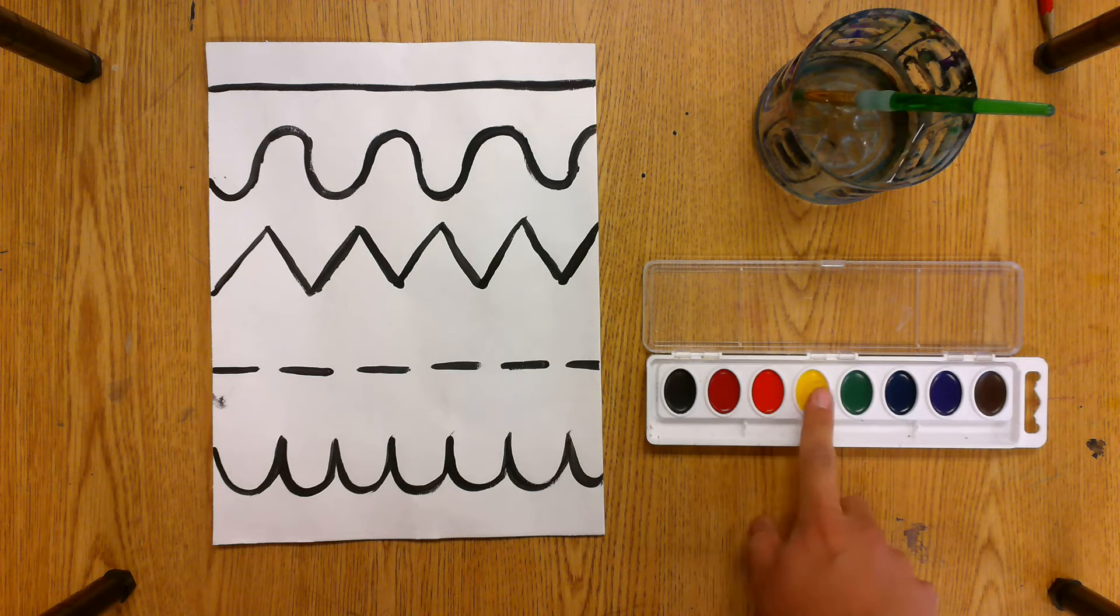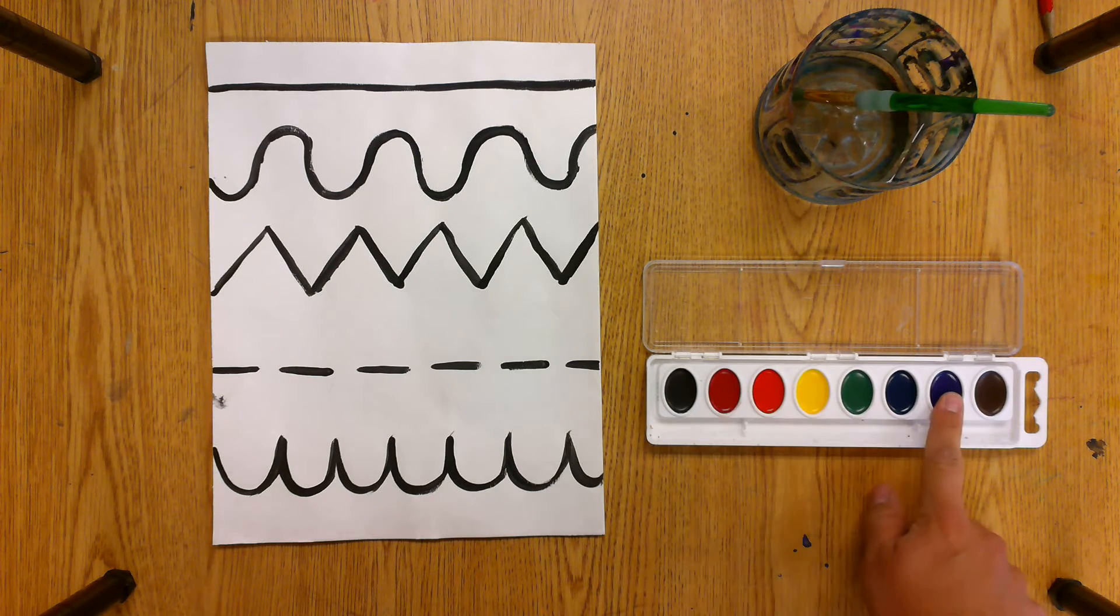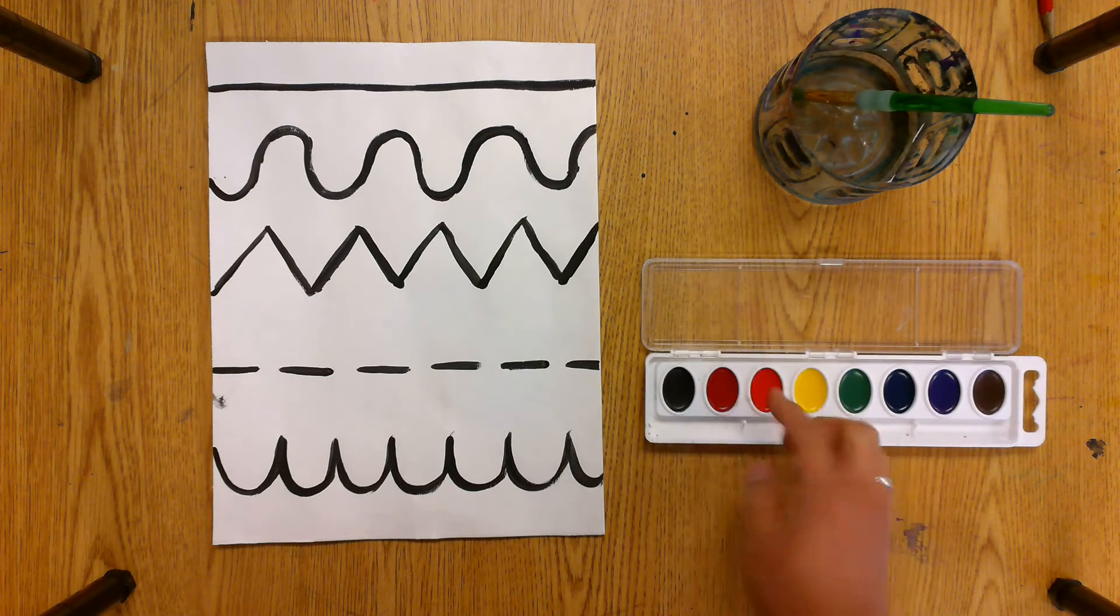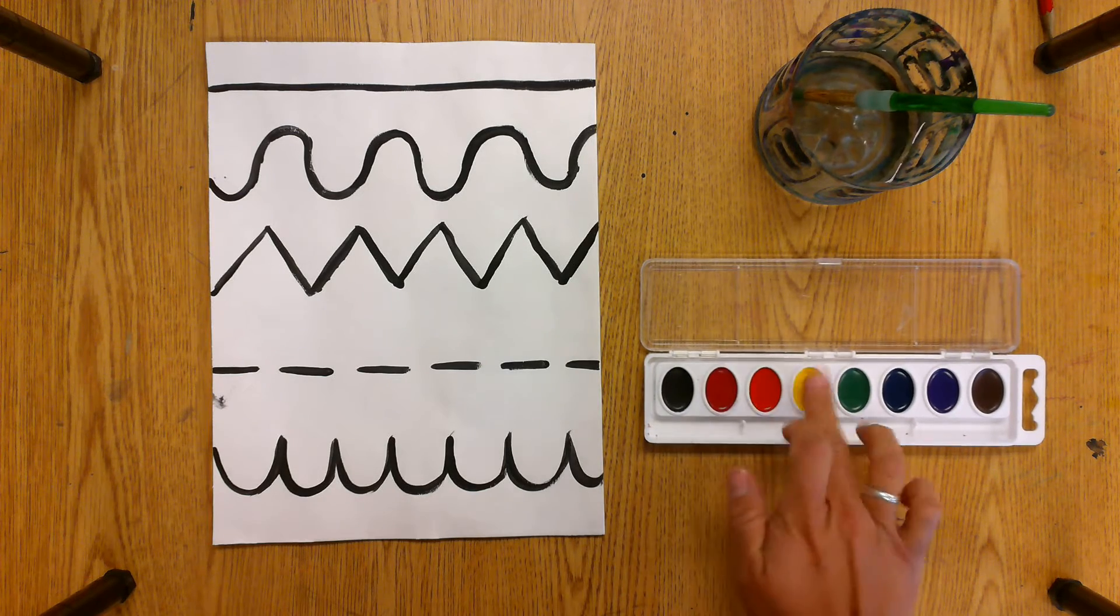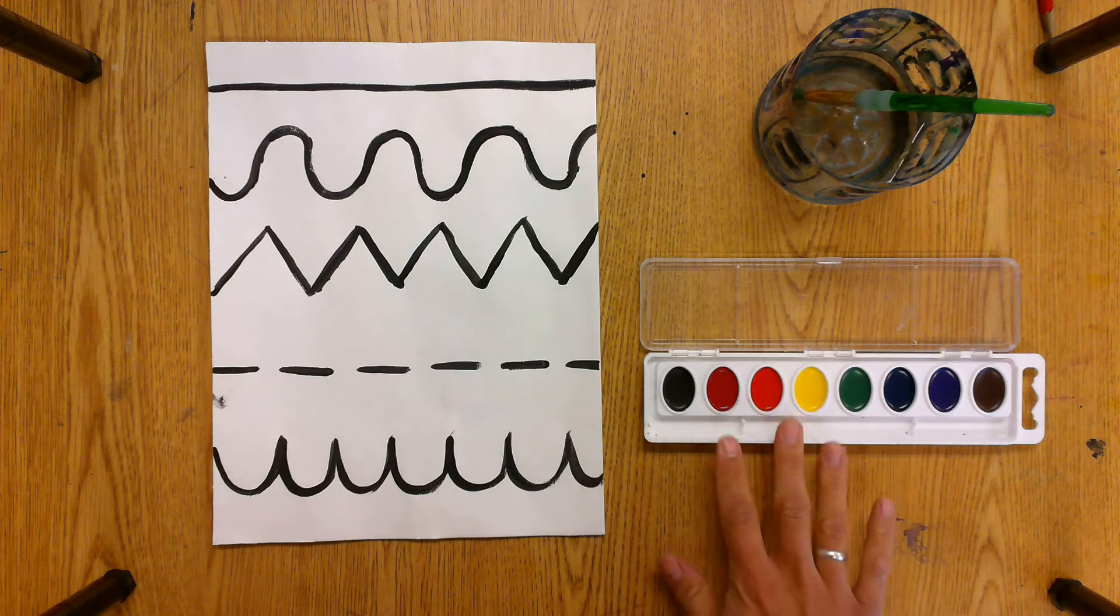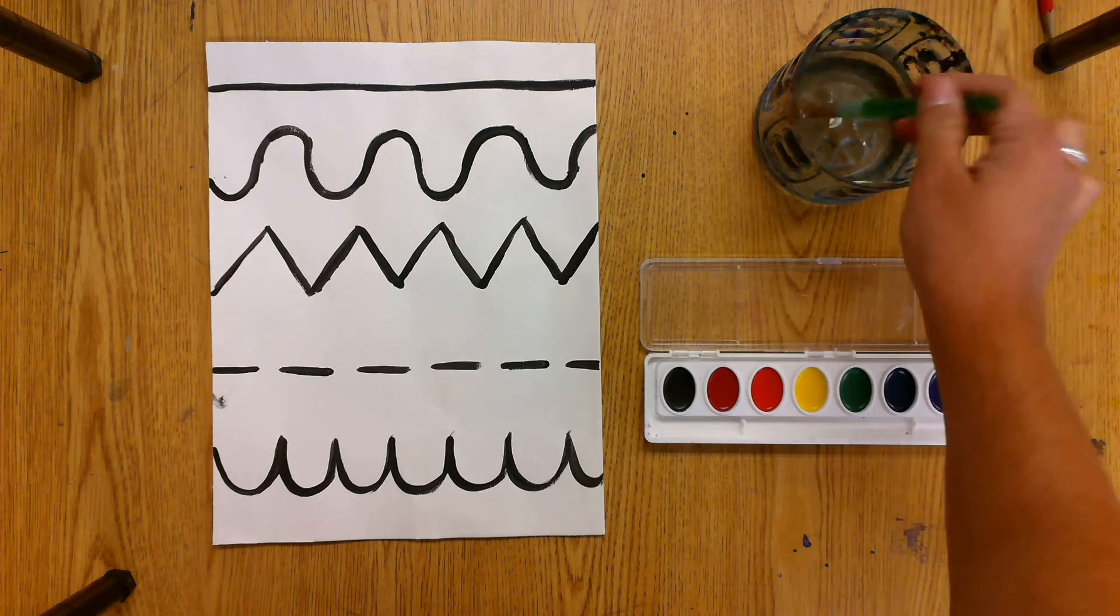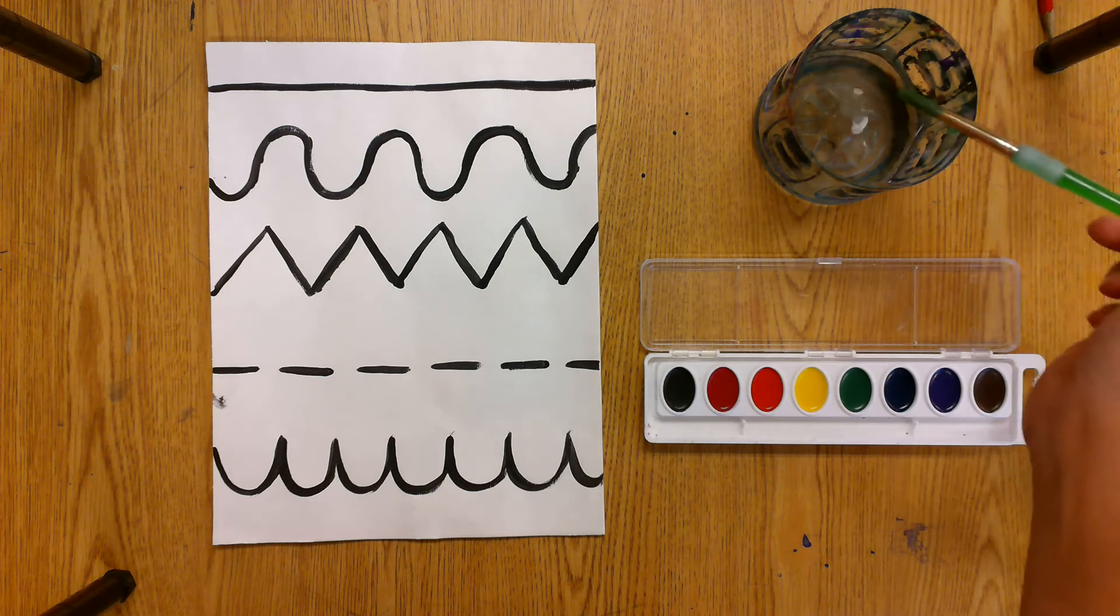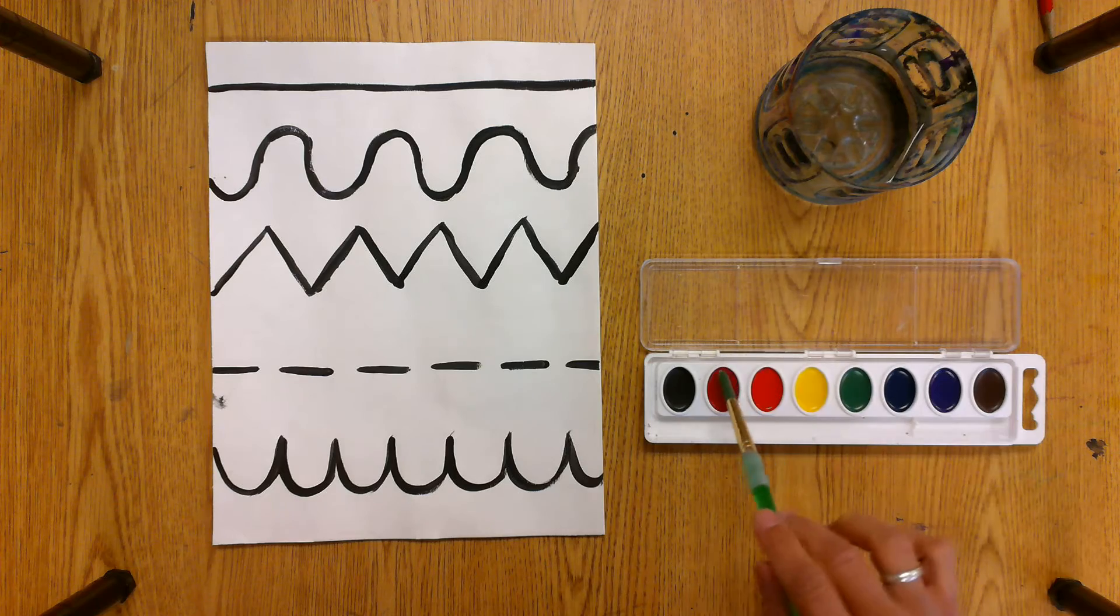So when you're painting, you're going to start with red and then move all the way down to violet. And right now, I'm touching these paints and they're not wet. How are these going to work? So what I need to do is I need to wake them up. So I'm going to get my brush ready, touch the hairs to the lip a little bit, let it drip a little bit, and I'm going to wake up the red.